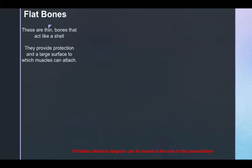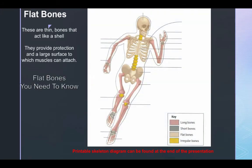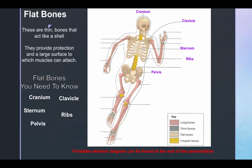Flat bones are thin bones that act like a shell. They provide protection and a large surface area to which muscles can attach. Flat bones you should know include the cranium, the clavicle, sternum, ribs, and pelvis.